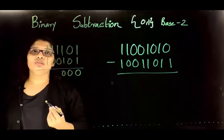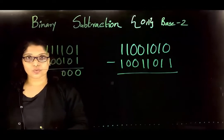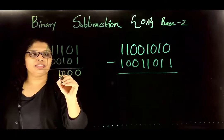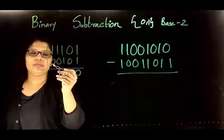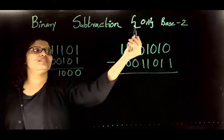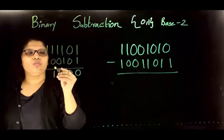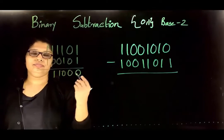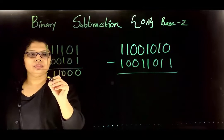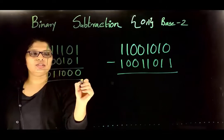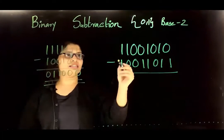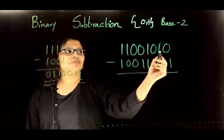Next, 1 minus 0 gives value 1, represented as 1 in binary. Again 1 minus 0 is 1, represented as 1. And 1 minus 1 is 0. So this is the final answer of the first binary subtraction.